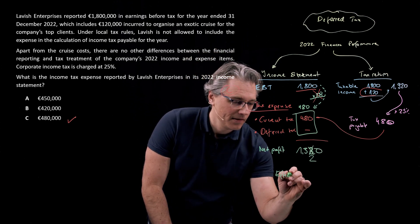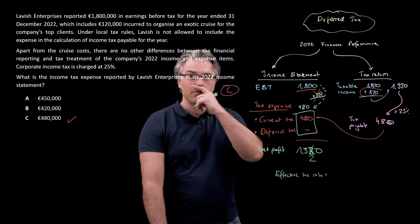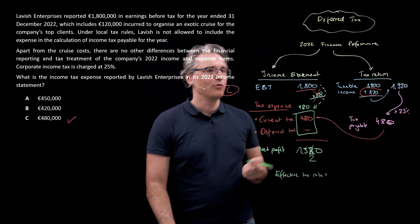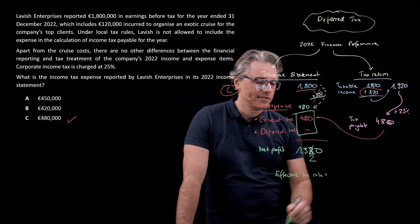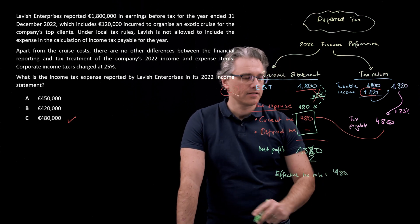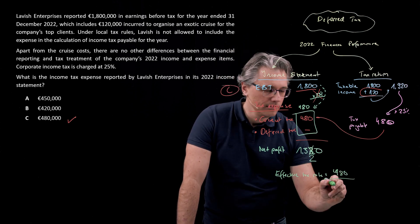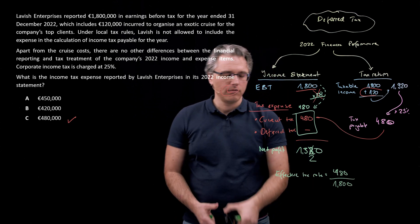It's 480,000, the reported tax expense, related to earnings before tax, 1,800,000. Let's check what this is. Okay, I can see 26, roughly 0.7%.